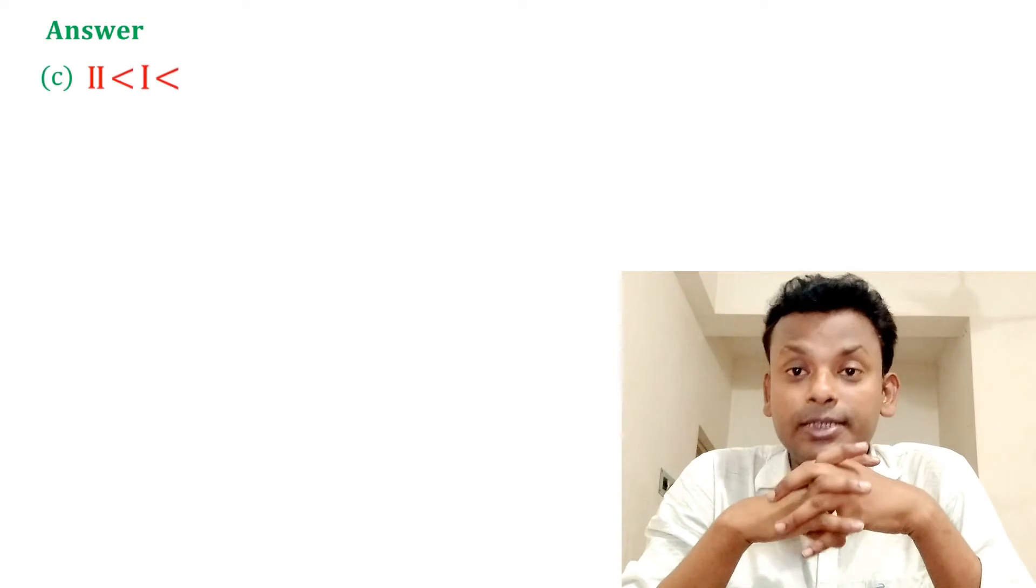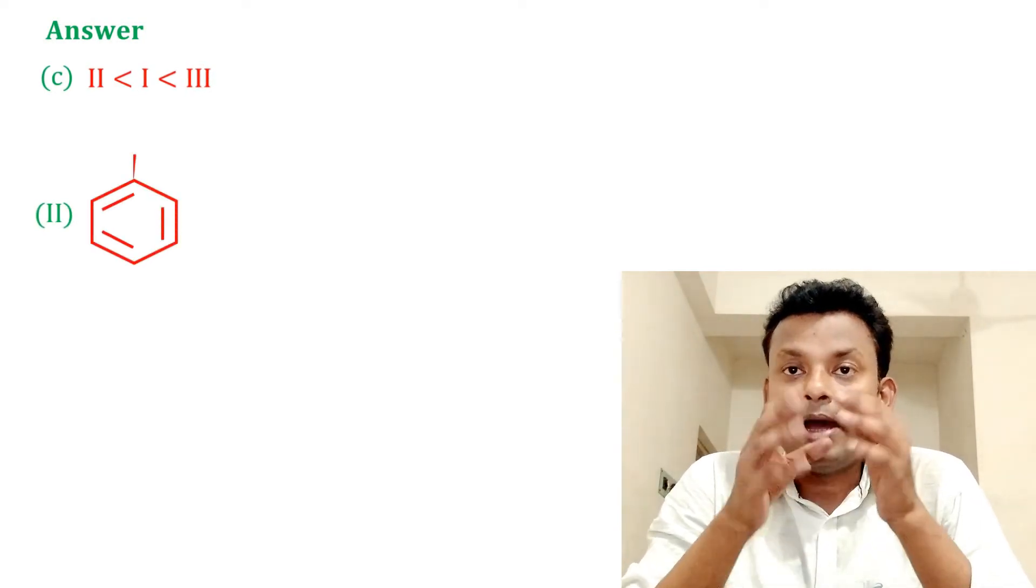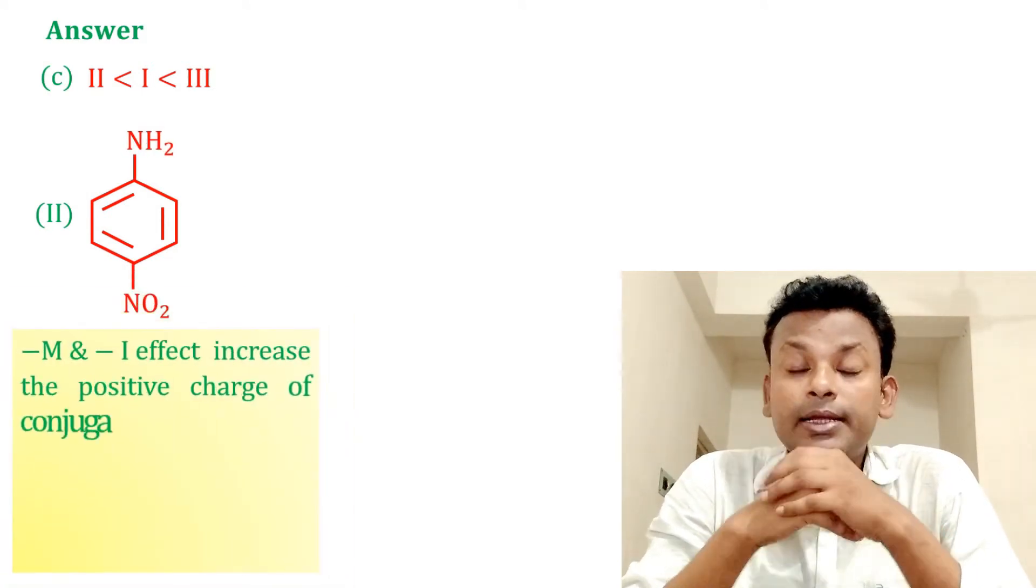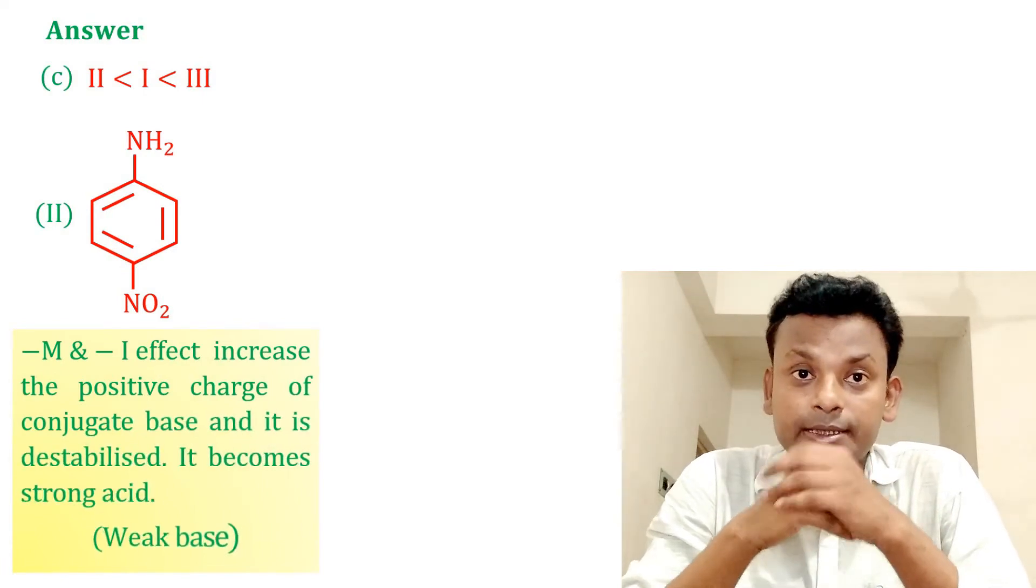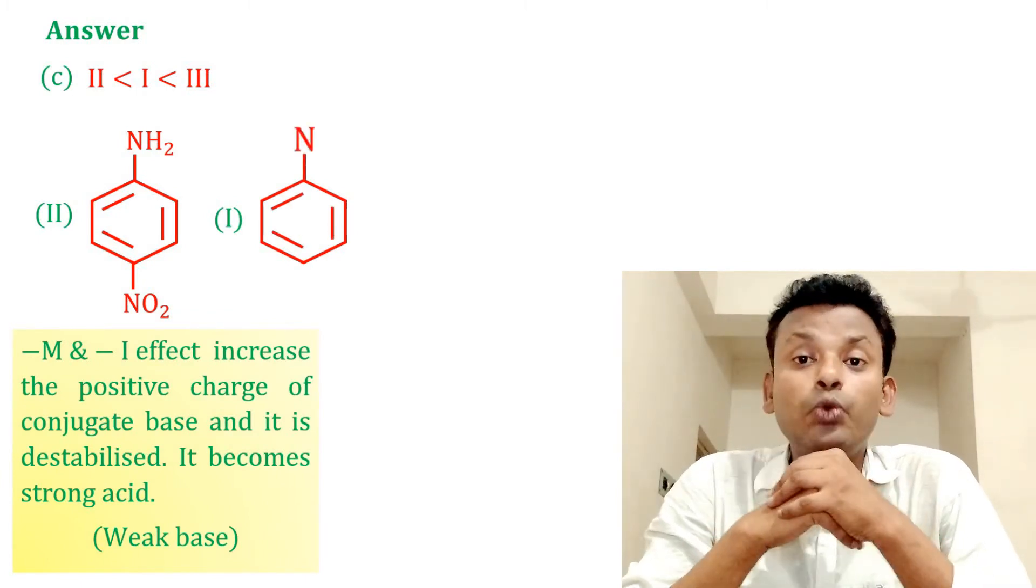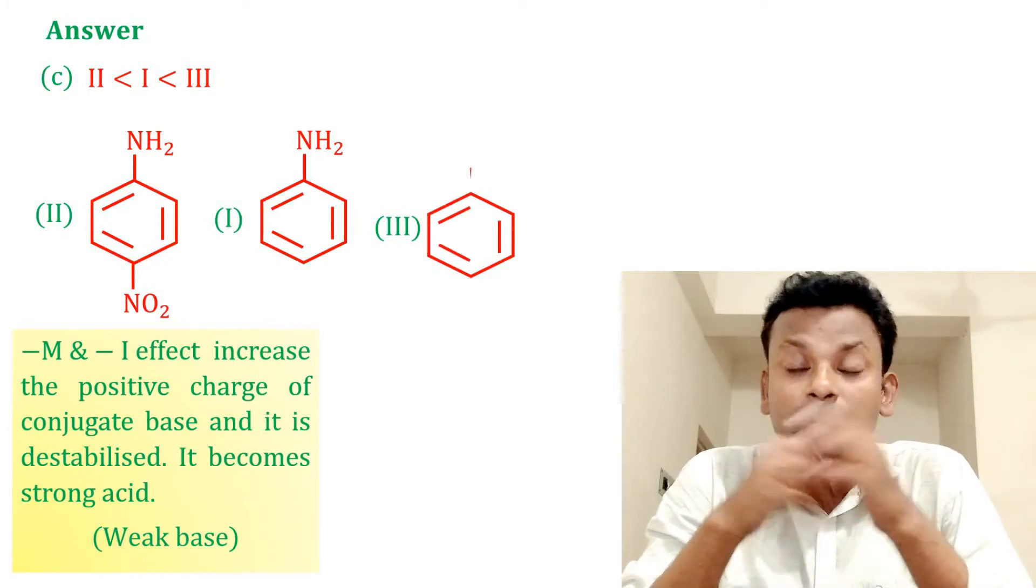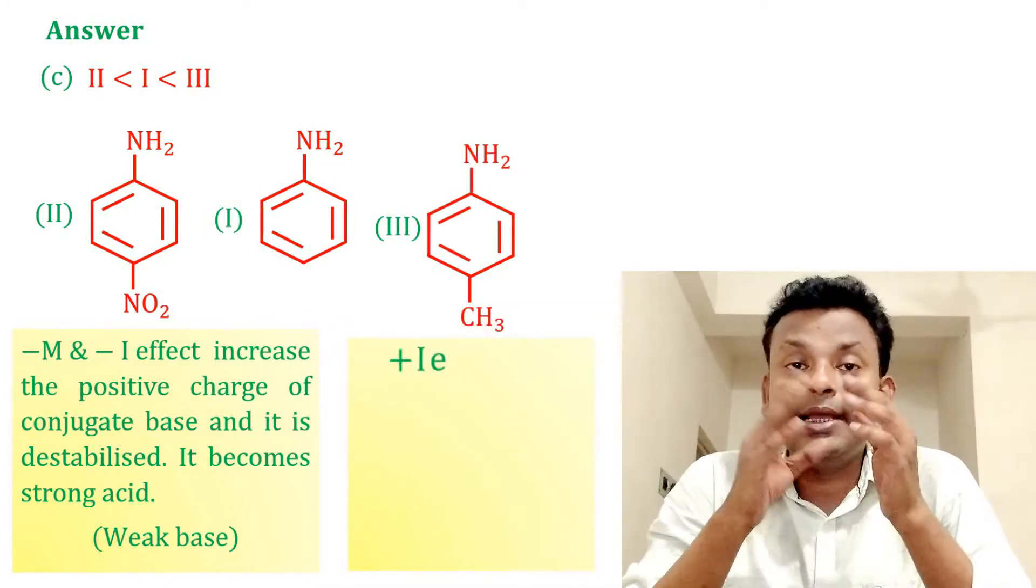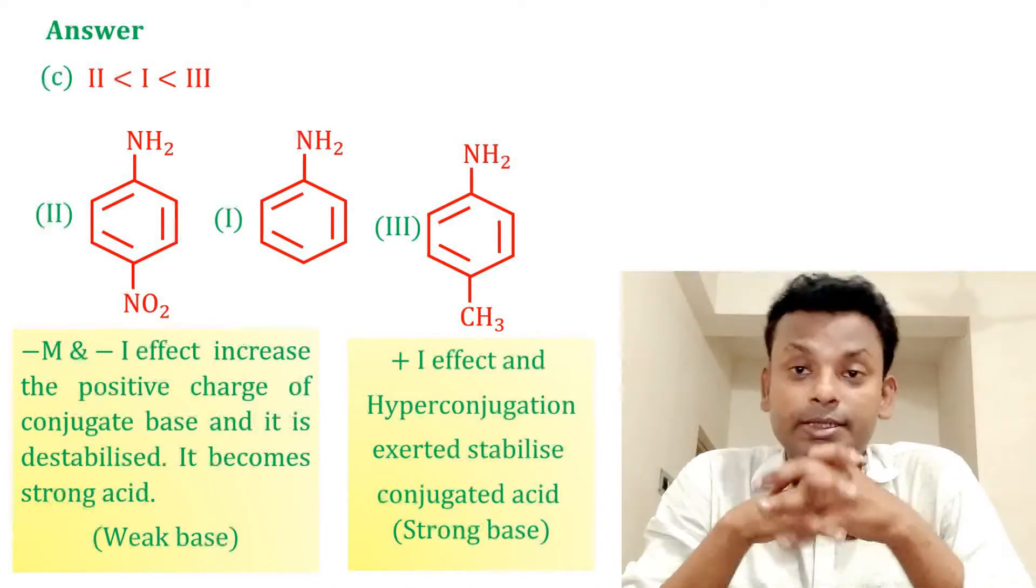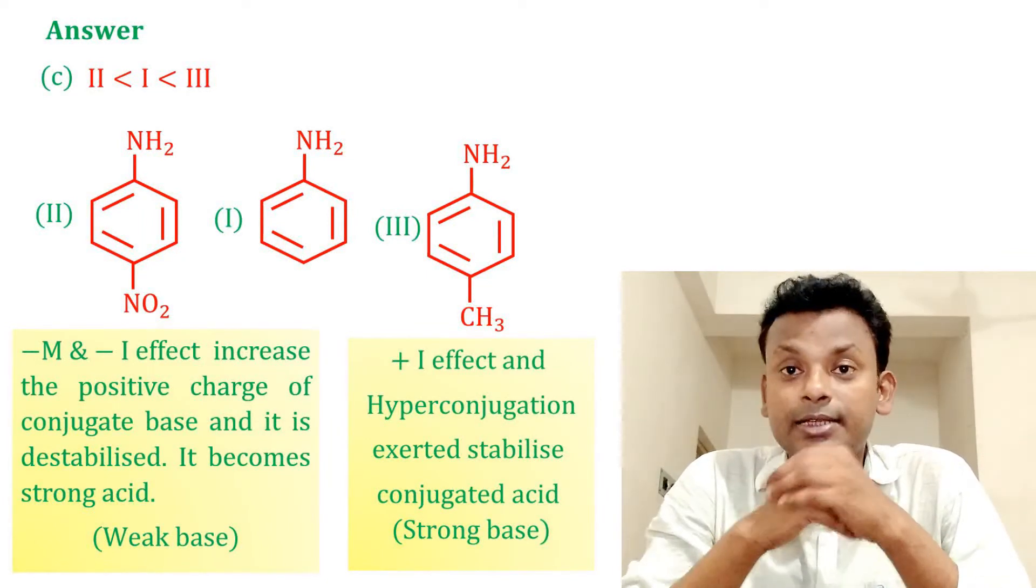2, para-nitroaniline, has -M effect and -I effect, increases the positive charge of conjugated base and it destabilizes and becomes strong acid, that is weak base. And 3, here +I effect of methyl group and hyperconjugation exert stabilized conjugated acid, that is strong base. So option C is correct answer, that is 2 less than 1 and less than 3.